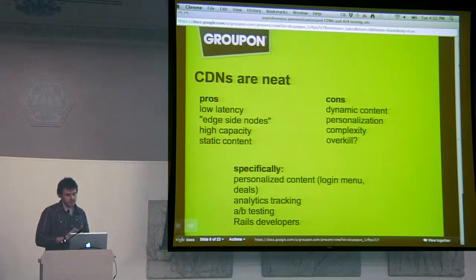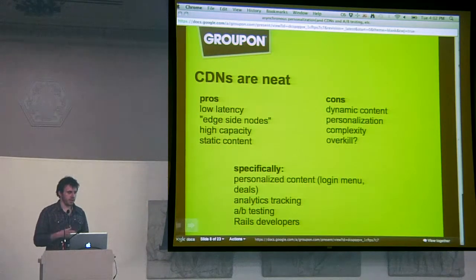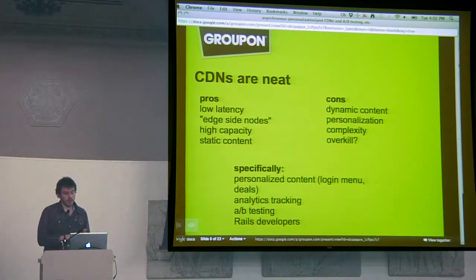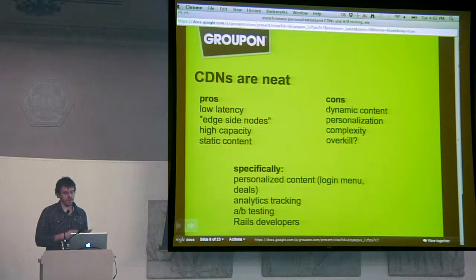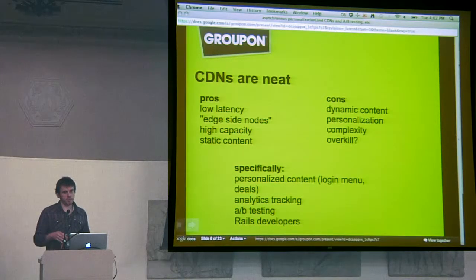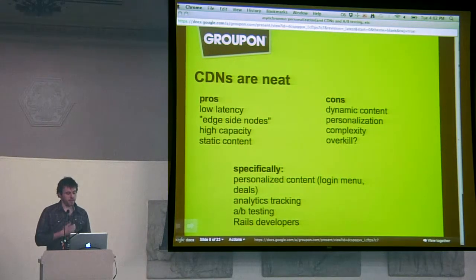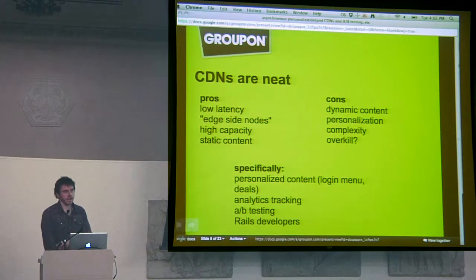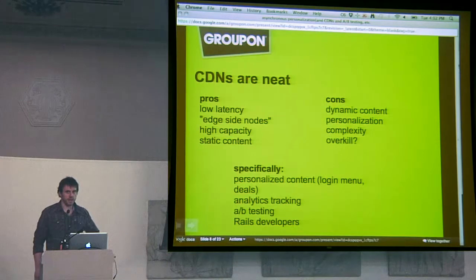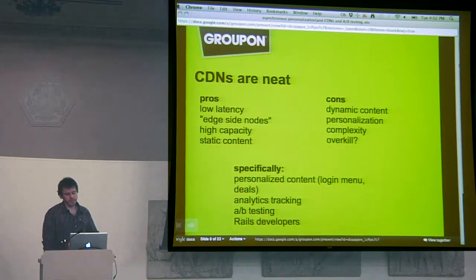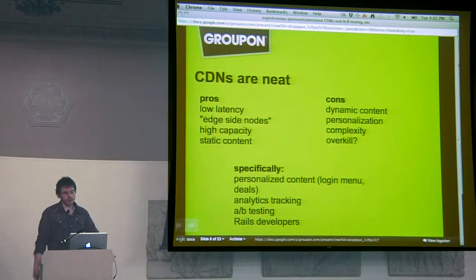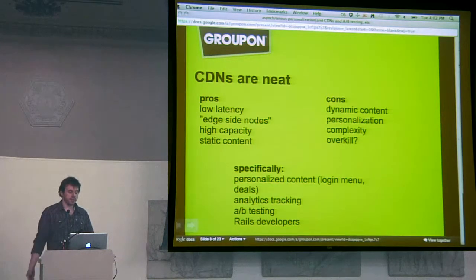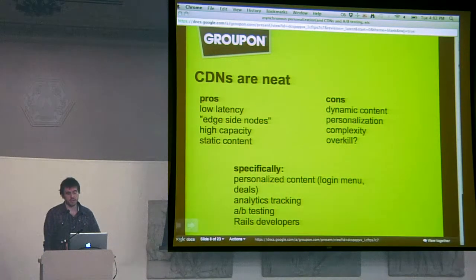A little bit about CDNs: if you're not familiar, they're basically a network of servers that cache content from your application and put them near the users. Pros: low latency, you get to use words like 'edge side nodes,' high capacity, and they're great for static content. Cons: dynamic content is not trivial to serve from a CDN. Personalization adds significant complexity, so for a lot of cases it's overkill.